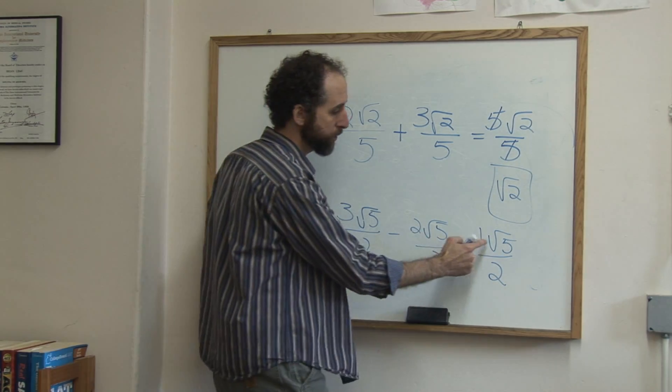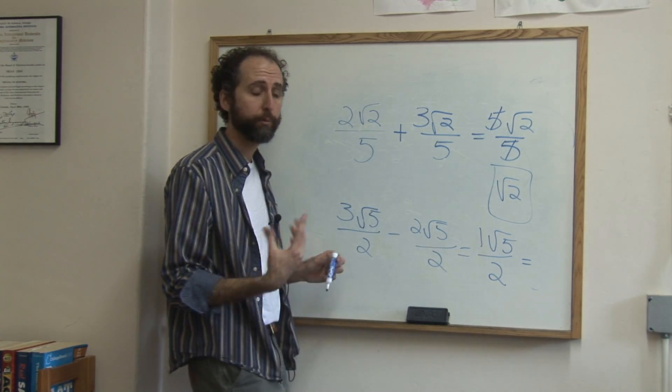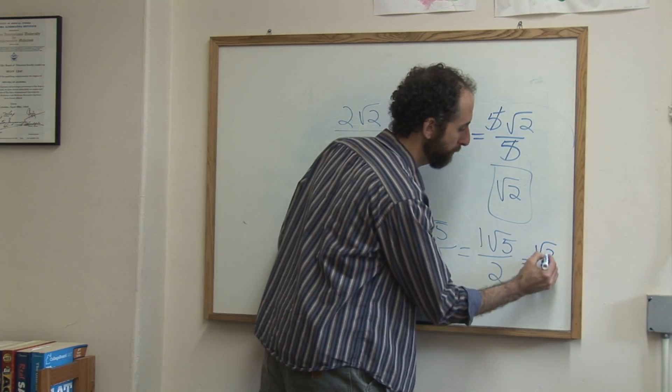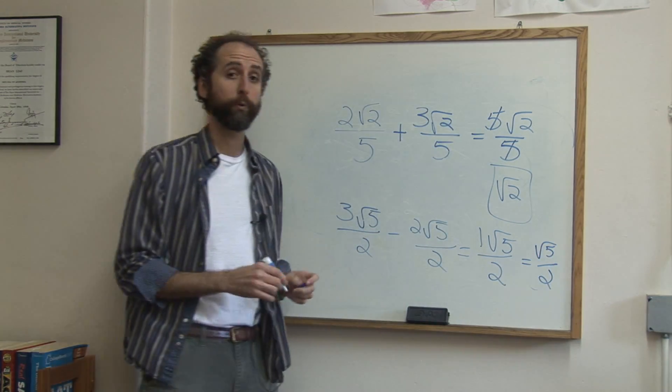So we have one square root of five over two and that's fine. That's the final answer. But you can also just write square root of five over two because the one we don't really need.